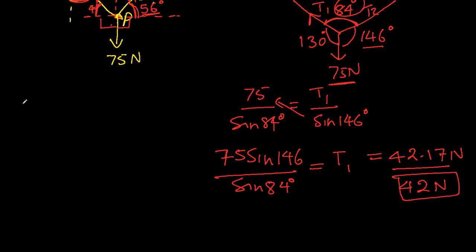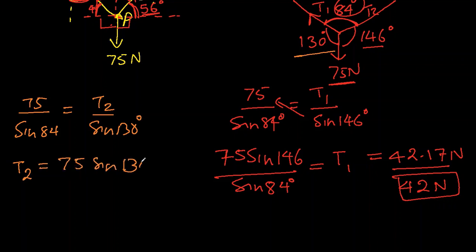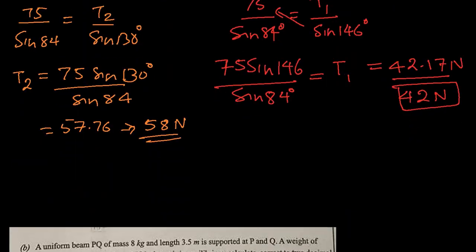Let's do tension 2. We write the same way: 75 divided by sine 84 equals t2, and the angle is 130 degrees. So t2 will be 75 sine 130 degrees over sine 84 degrees. We got 57.76, and to the nearest whole number it will be 58 newtons. Let's move on to part B.